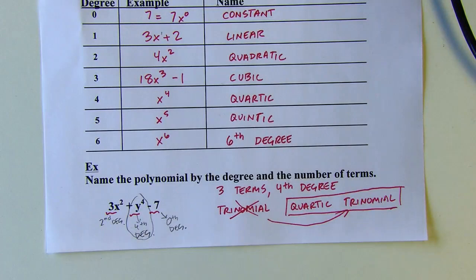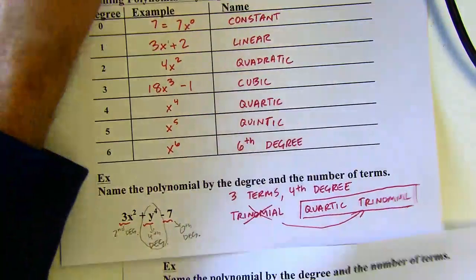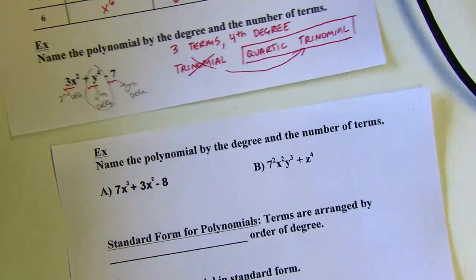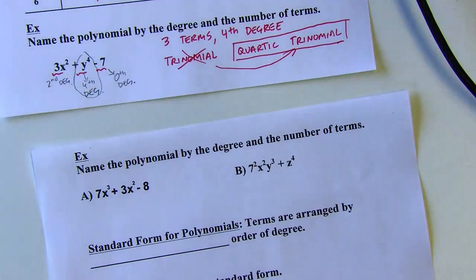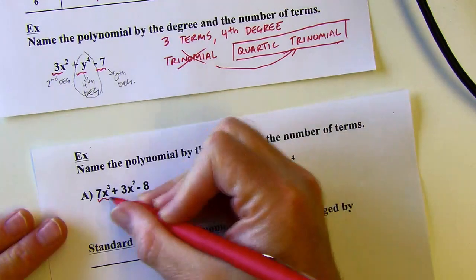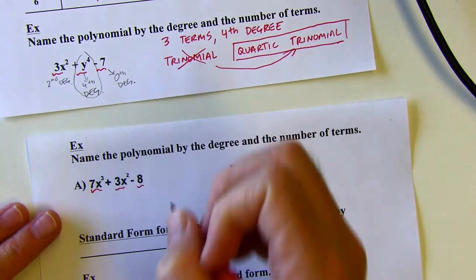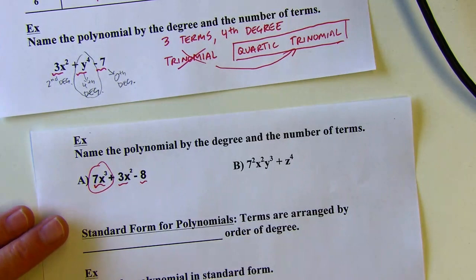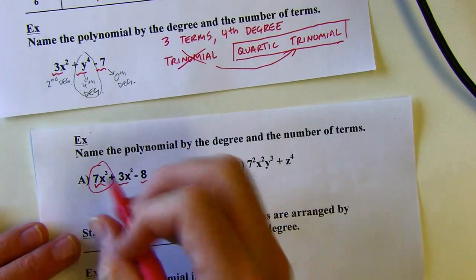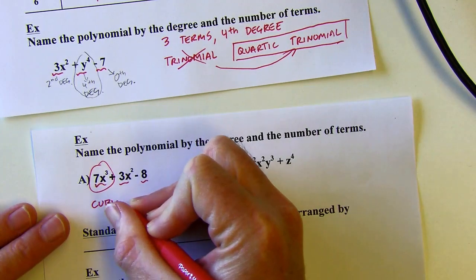There are two problems on the top of the next page that are the same kind of thing, so you can pause the video and try them. For the first one: it's got three terms, so it's a trinomial. The highest degree term is the first term, which is third degree. So this is going to be a cubic trinomial.